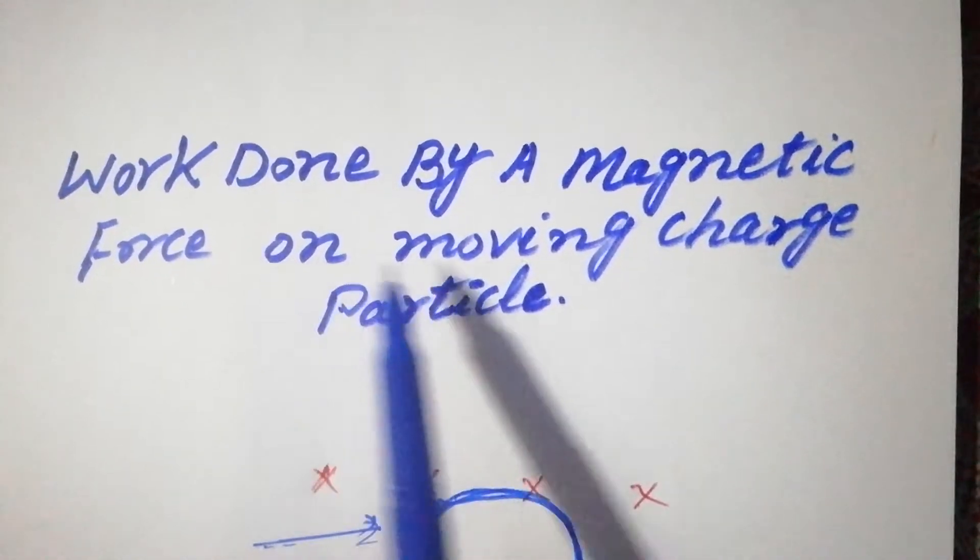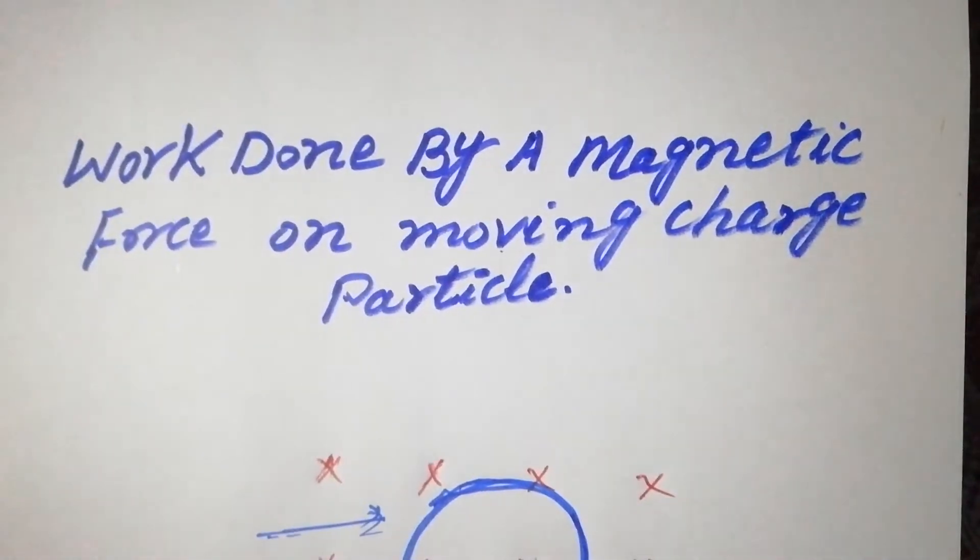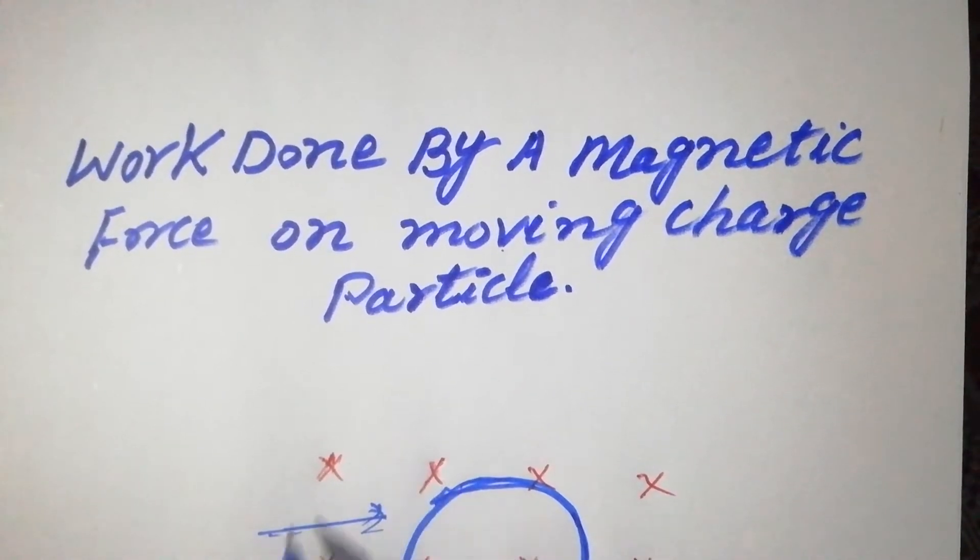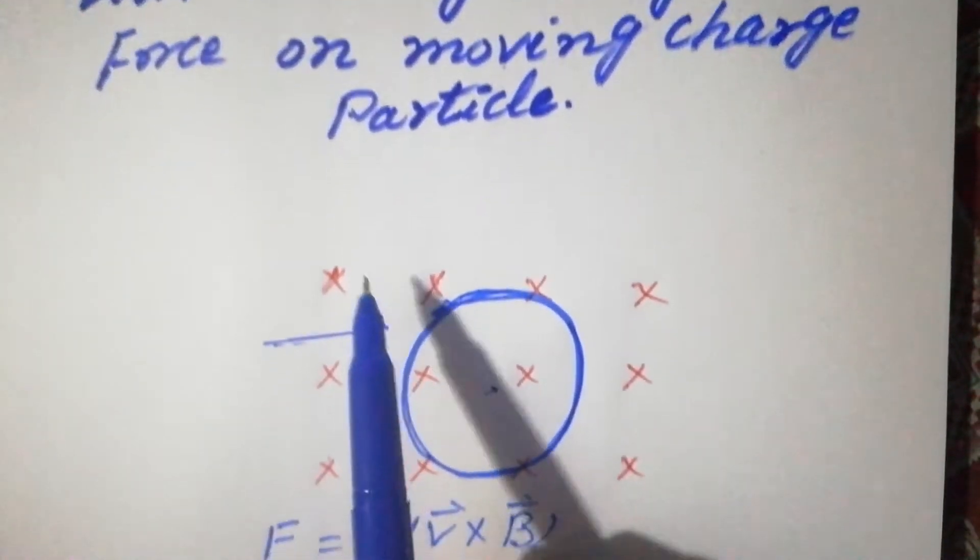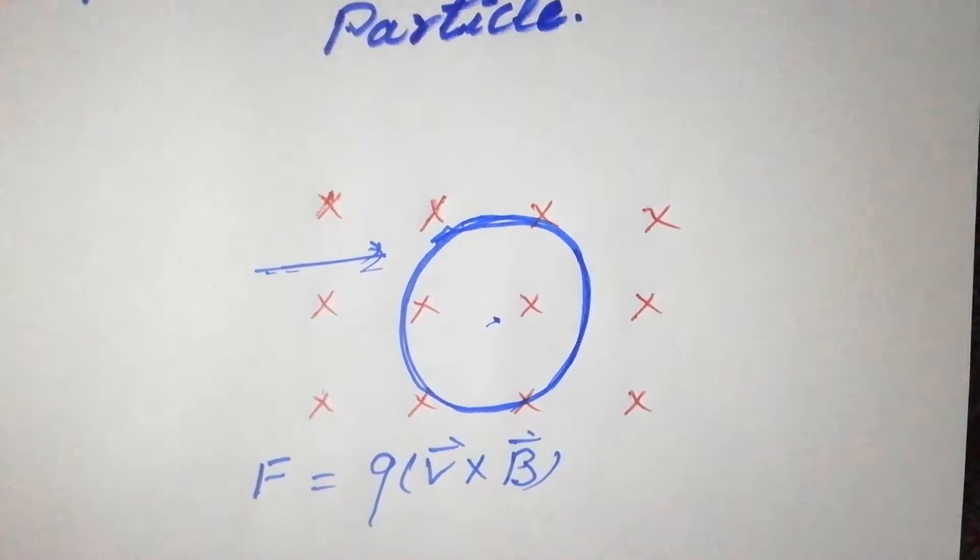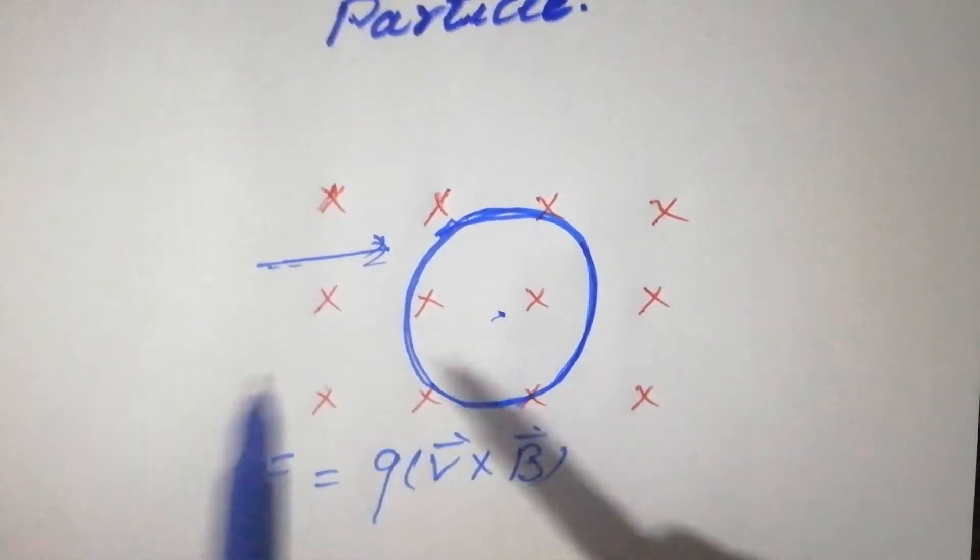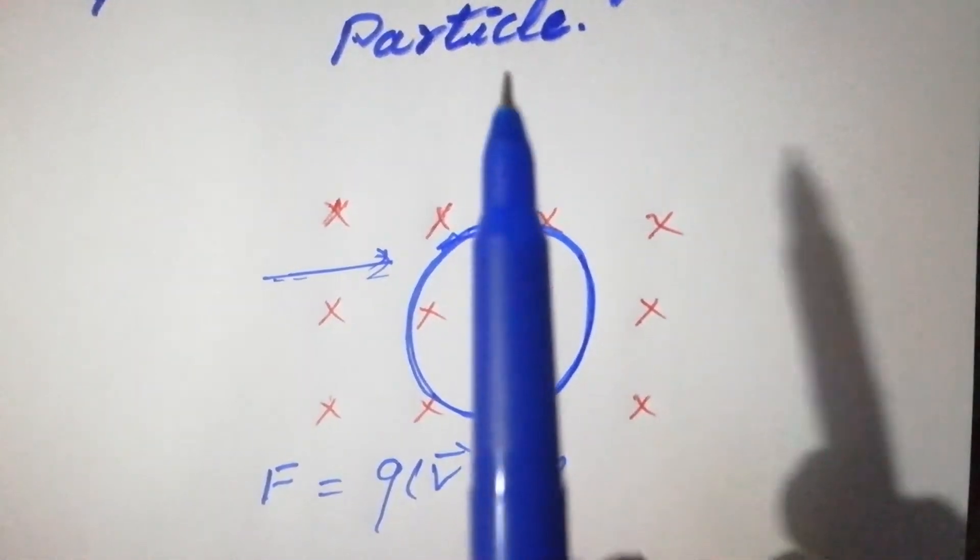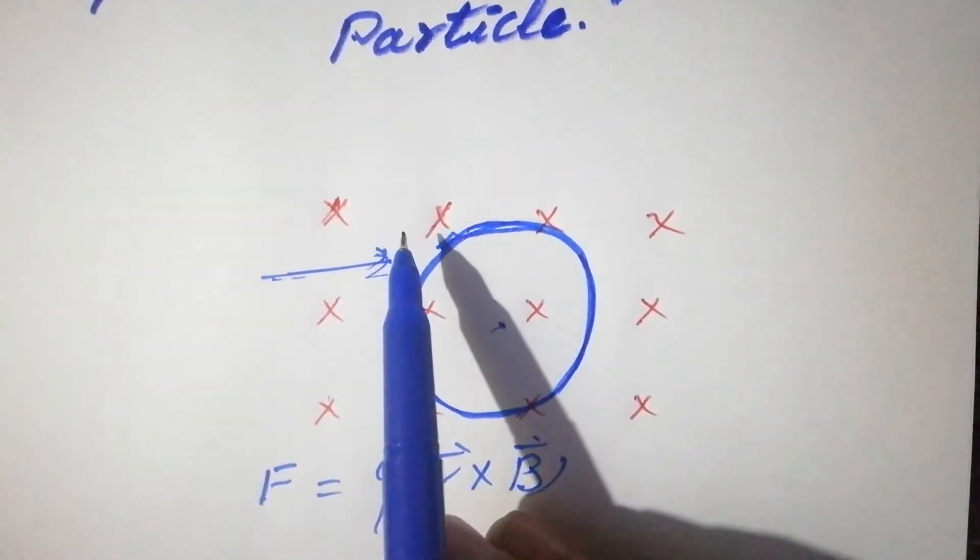Work done by a magnetic force on a moving charged particle. Let's suppose there's a region where the magnetic field is acting perpendicular and into the page - north pole at the upper end and south pole at the lower end.